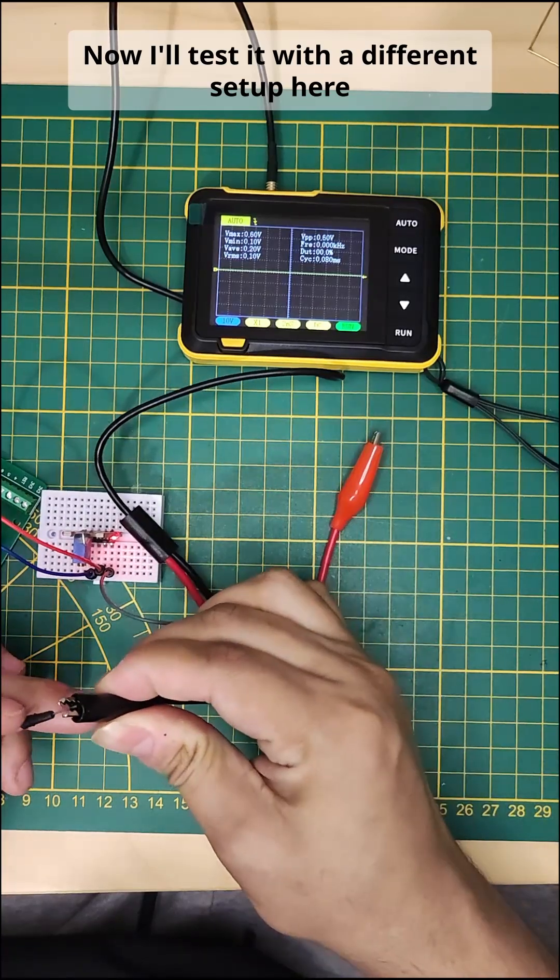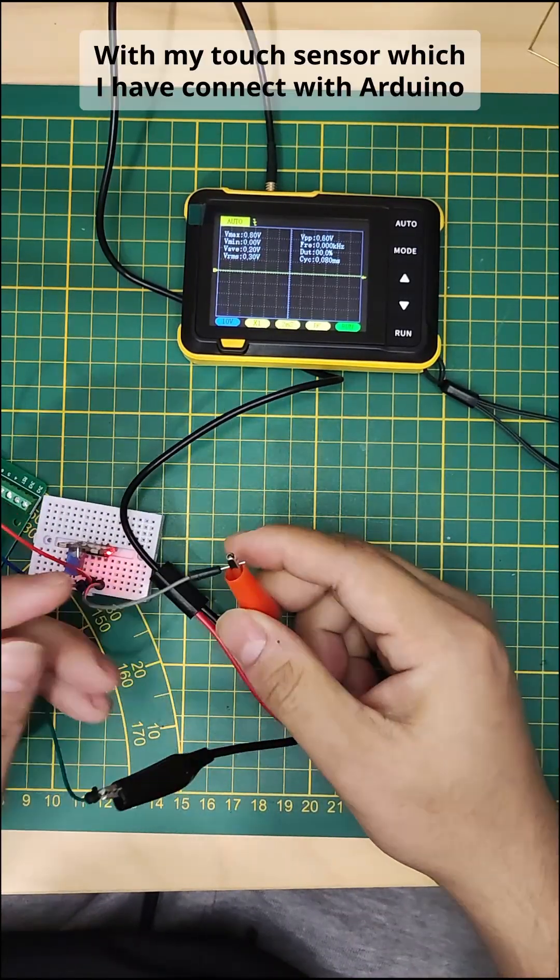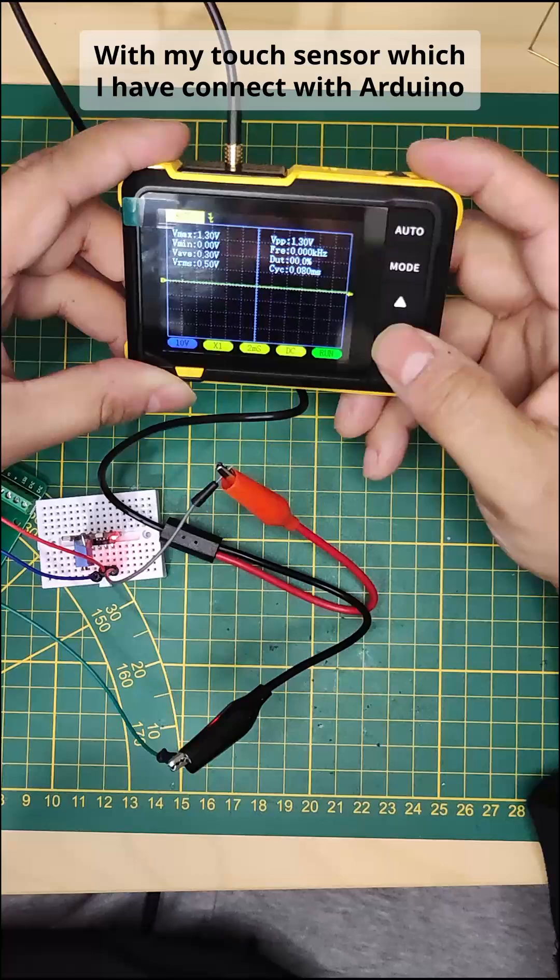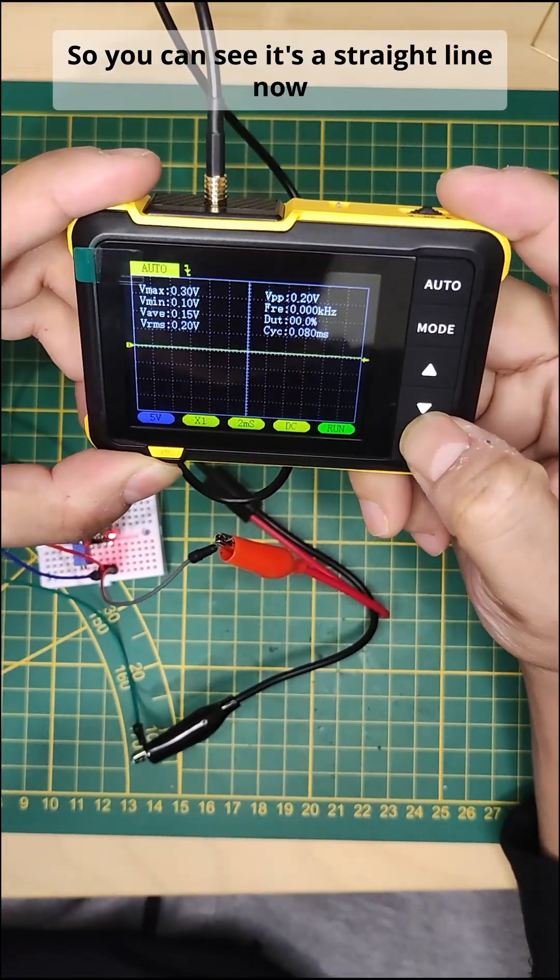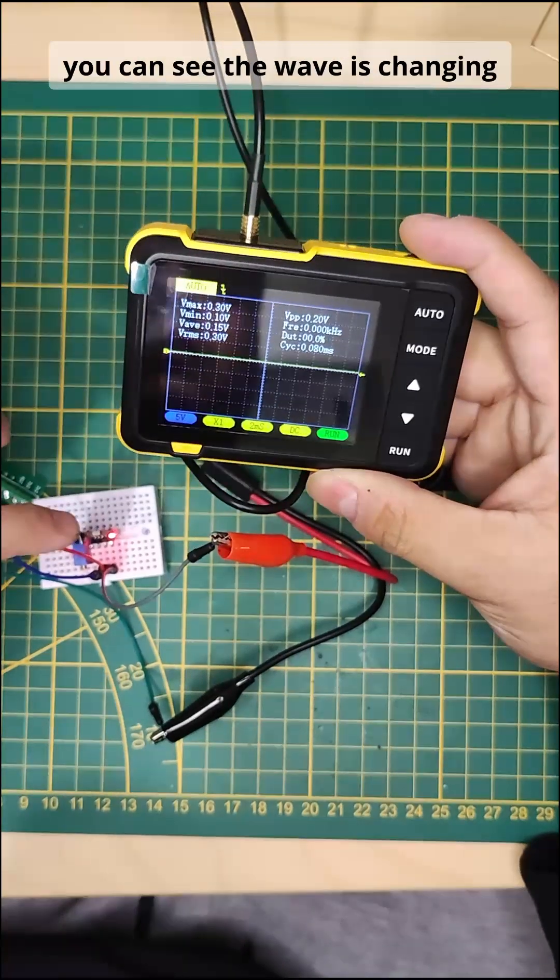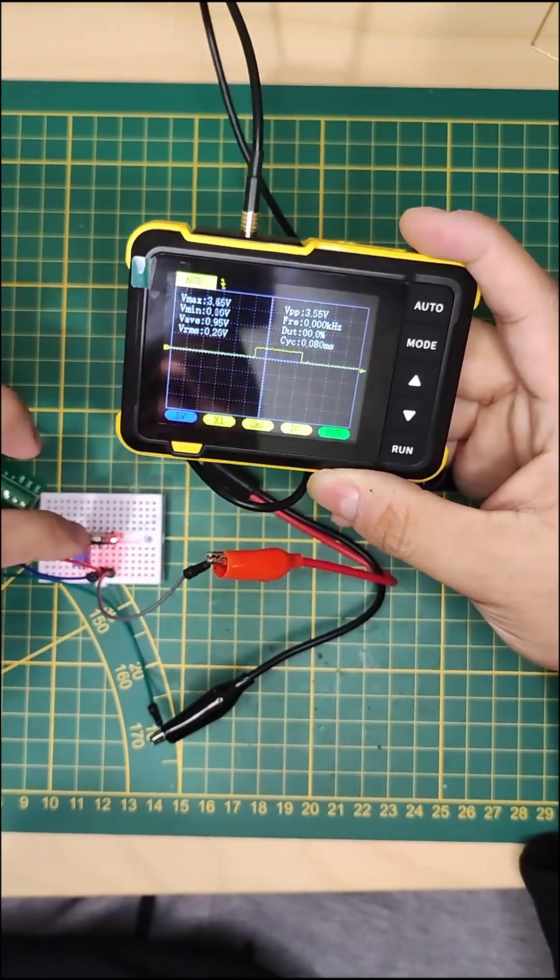Now I'll test it with a different setup here with my touch sensor which I've connected with Arduino. You can see it's a straight line now, and when I tap it you can see the wave is changing. It is on and off switching.